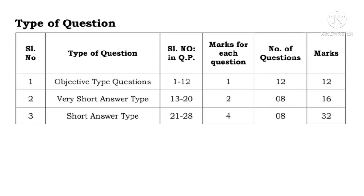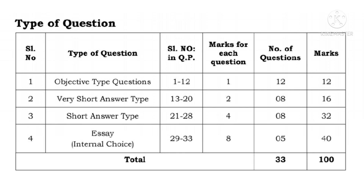Now let us see the different types of questions in SA1 examinations. Questions 1 to 12 are Objective Type Questions, each carries 1 mark — total 12 marks. Questions 13 to 20 are Very Short Answer type, each carries 2 marks, 8 questions — total 16 marks. Questions 21 to 28 are Short Answer type, each carries 4 marks, 8 questions — total 32 marks. Questions 29 to 33 are Long Answer type with internal choice, each carries 8 marks, 5 questions — total 40 marks. Grand total: 33 questions, 100 marks.